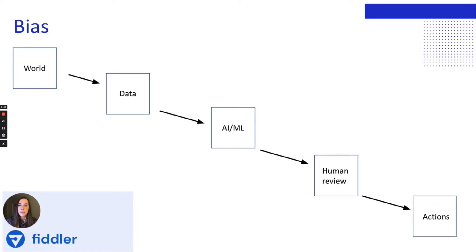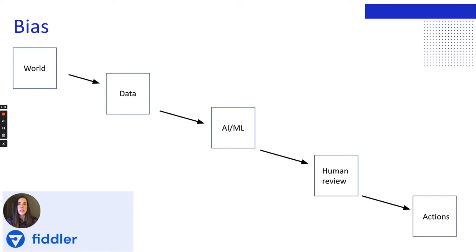Bias can exist in many shapes and forms, many of which can lead to unfairness in different downstream learning tasks. In fact, bias can be introduced at any stage in our pipeline. The original source of bias comes from the world — our society is biased, and this bias often becomes encoded in the data we've collected. As individual data scientists, we can look for bias that's become encoded in our data, check for bias in our model, and in the human review process. Let's walk through a few examples.